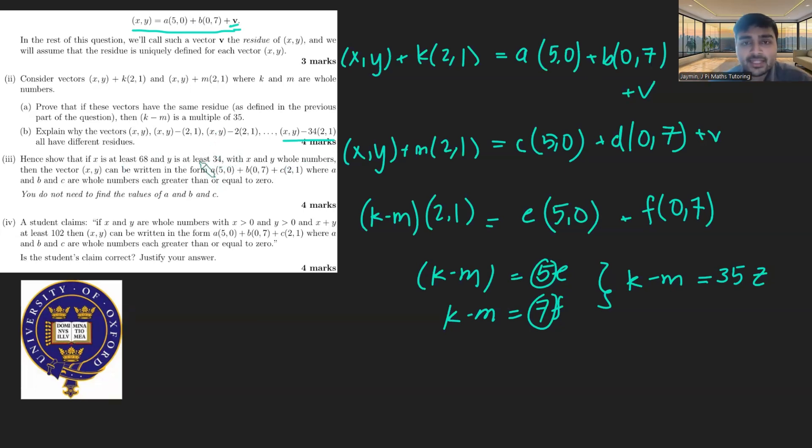Now, we have those 35 vectors. Why must they have different residues? Well, we can just use part a, because if any of them did have the same residues, well, we know that they're all of the form like this, where k and m are whole numbers, going from 0 to minus 34. If they did have the same residues, then I could deduce that each one of these is of the form (x,y) plus k, or minus k, times (2,1), where k is between minus 34 and 0.